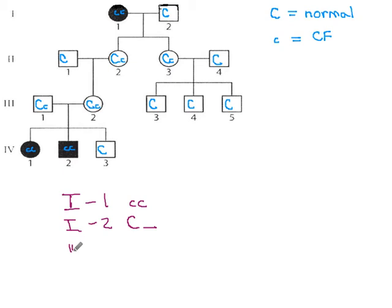Generation three one definitely is big C, little c. Big C because they don't have CF, but little c because their kids got it from them. Generation three two is also big C, little c for the same reasons. Generation four one is little c, little c. If you have cystic fibrosis that's definitely your genotype.